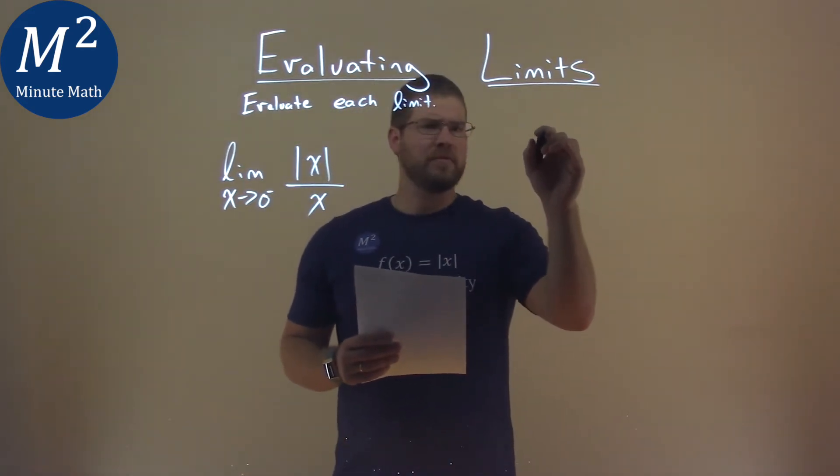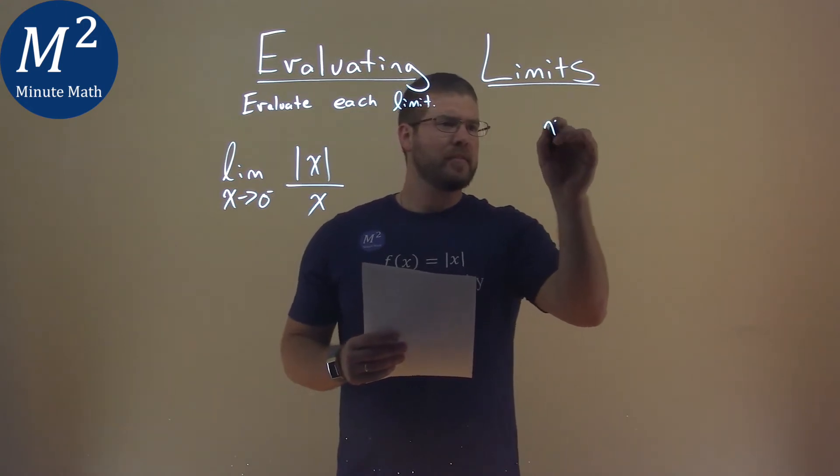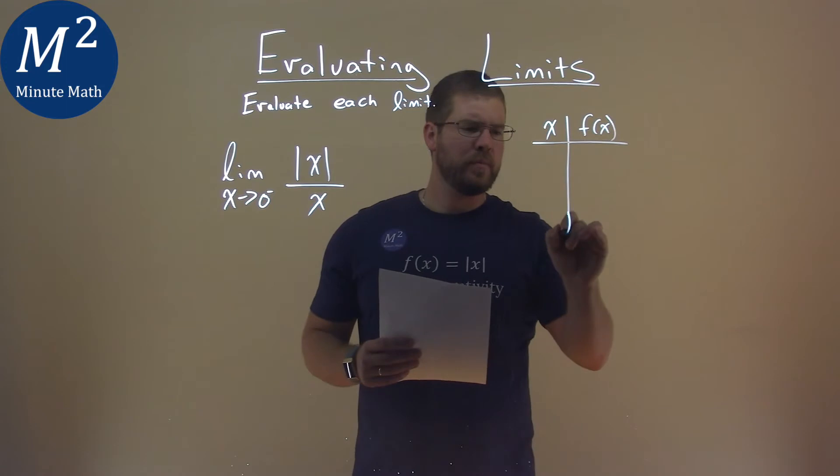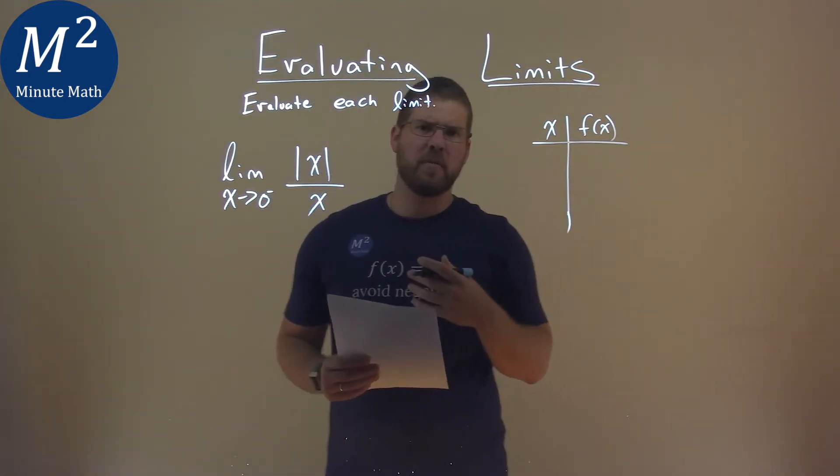So if we use a table of just x and f of x, let's see what happens when we plug in as we approach 0 from both sides, and then we'll go from there.